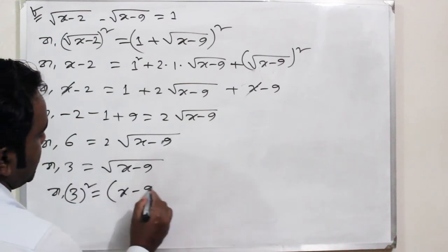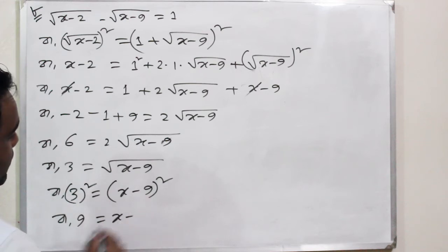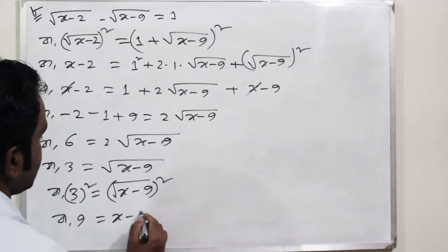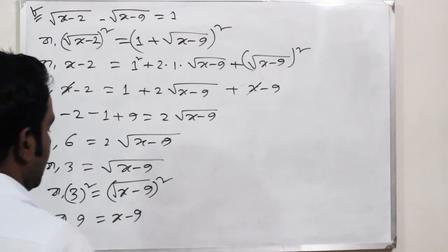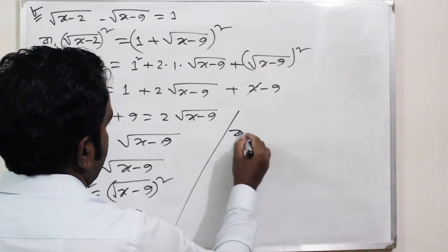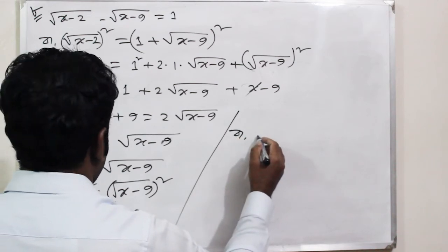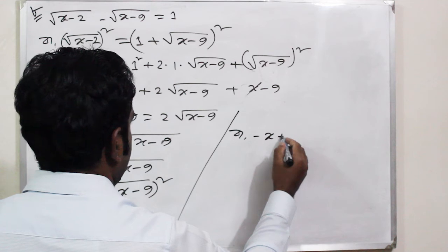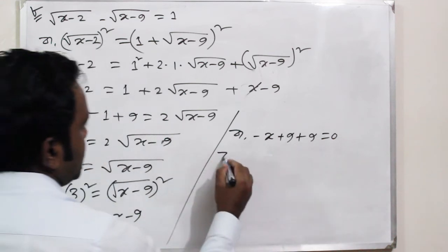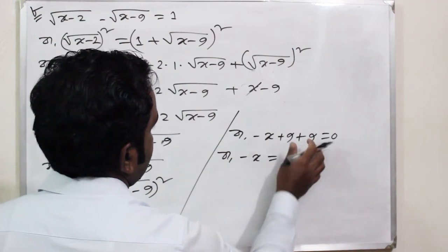X minus nine, whole square. Can I nine equal X minus a? So we have to write a root. Minus x plus 9 plus 9 equal 0, so we have to write a root: minus x minus 18.